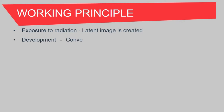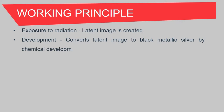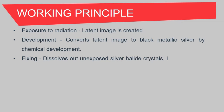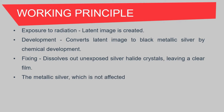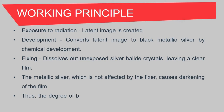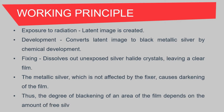Working principle. First is exposure. When the film is exposed to radiation, a latent image is created. Next is development. This process converts the latent image to black metallic silver by a chemical development. The last step is fixing. This is done to dissolve out unexposed silver halide crystals, leaving a clear film. The metallic silver which is not affected by the fixer causes darkening of the film.